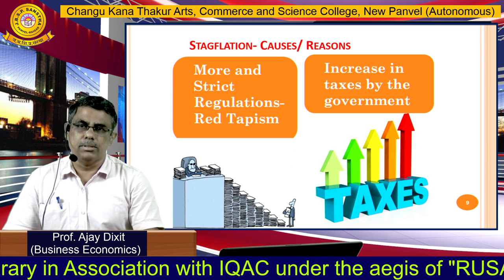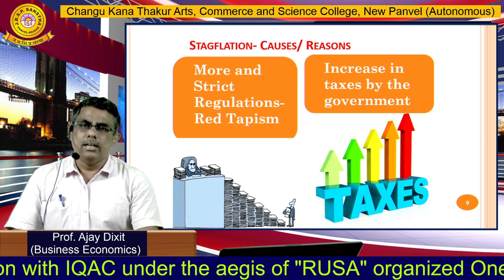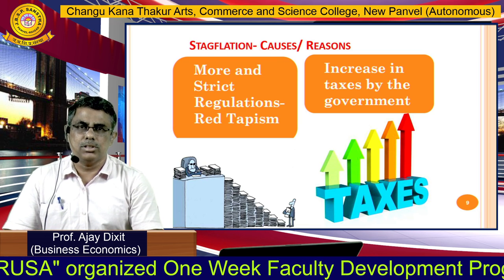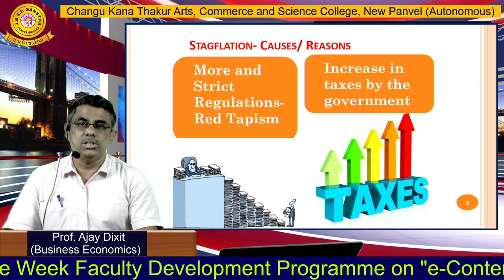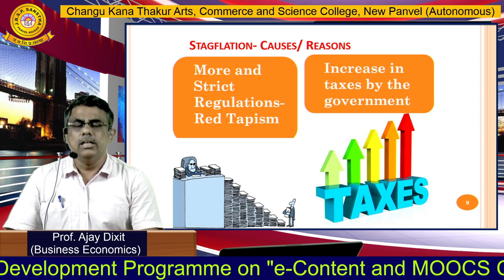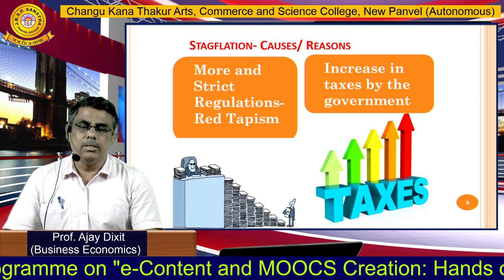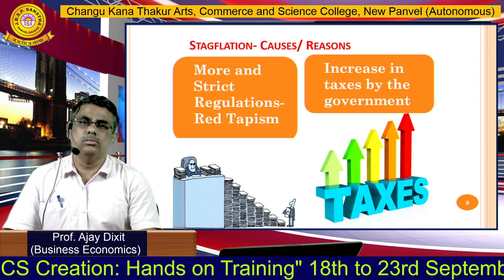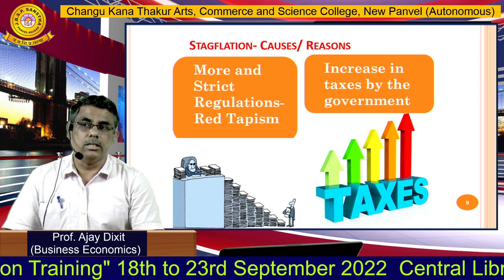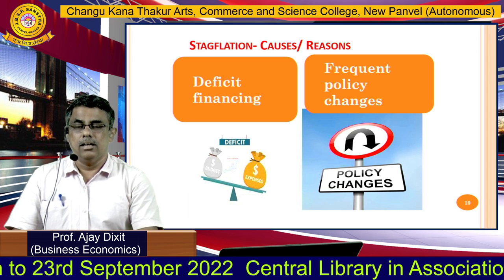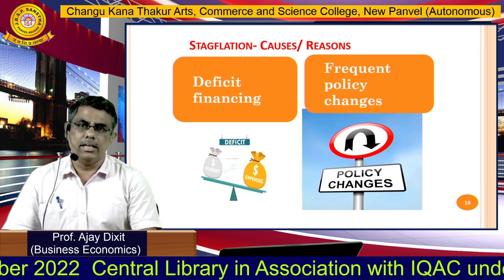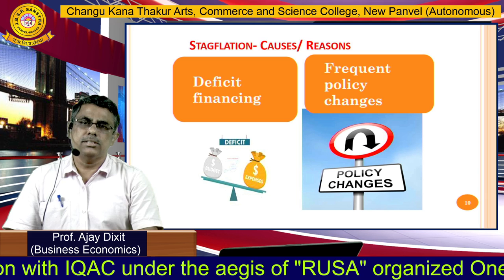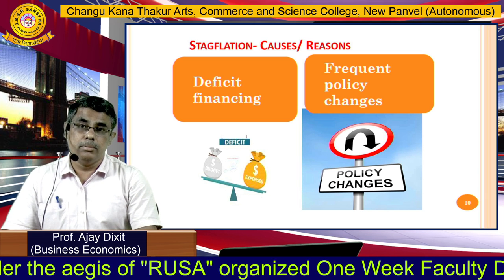More and stricter regulations — what we call red tapism — also cause stagflation. If more and more regulations are imposed by the government, clearing of files and other processes gets delayed, leading to delayed production and lower output. Increasing taxes by the government consistently raises prices of commodities through indirect taxes, leading to inflation. Deficit financing — where government expenditure is higher than its income — leads the government to print new notes or take loans from the central bank or international agencies, burdening the economy.